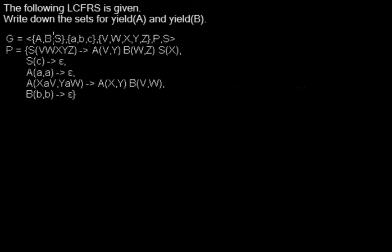Here we are requested to write down the sets for yield of A and yield of B. That means we are requested to write down the sets of strings that can be generated by A and B, or the sets of tuples that A and B can generate.